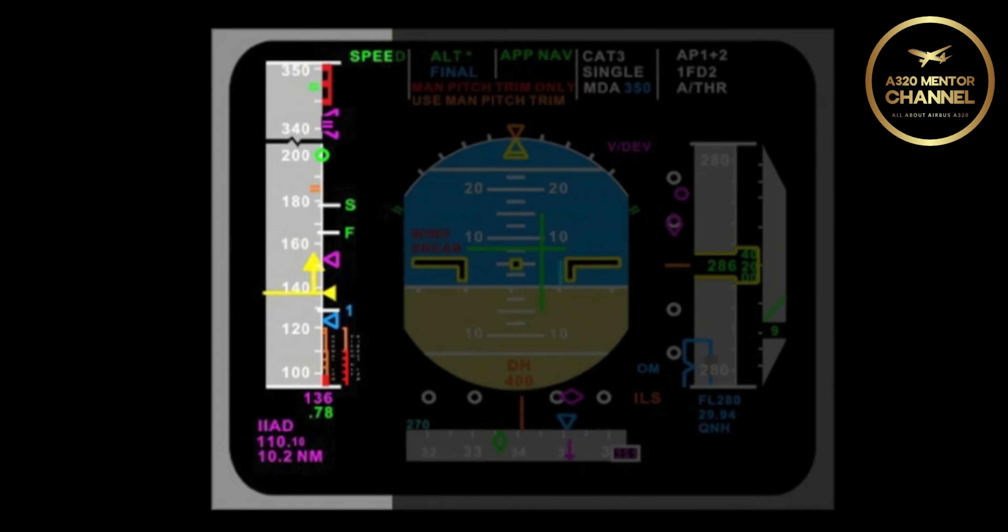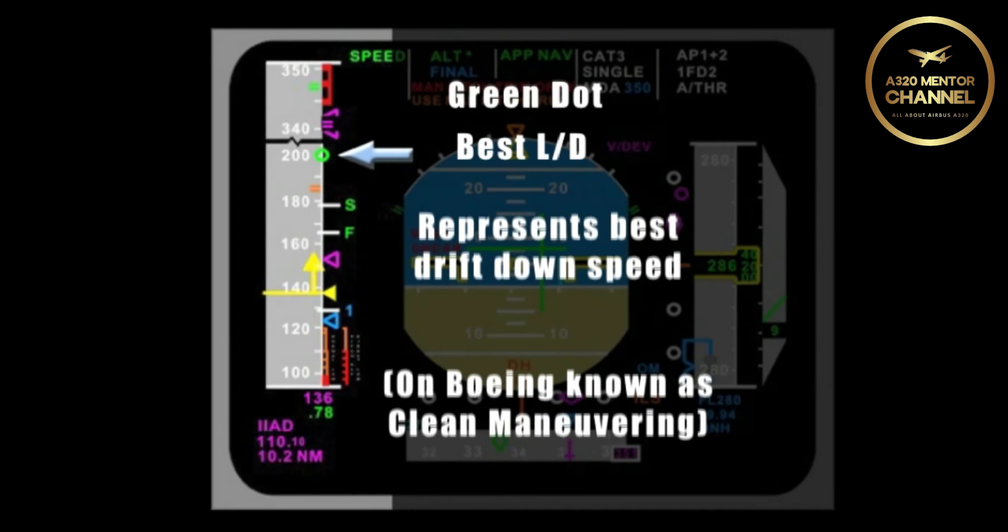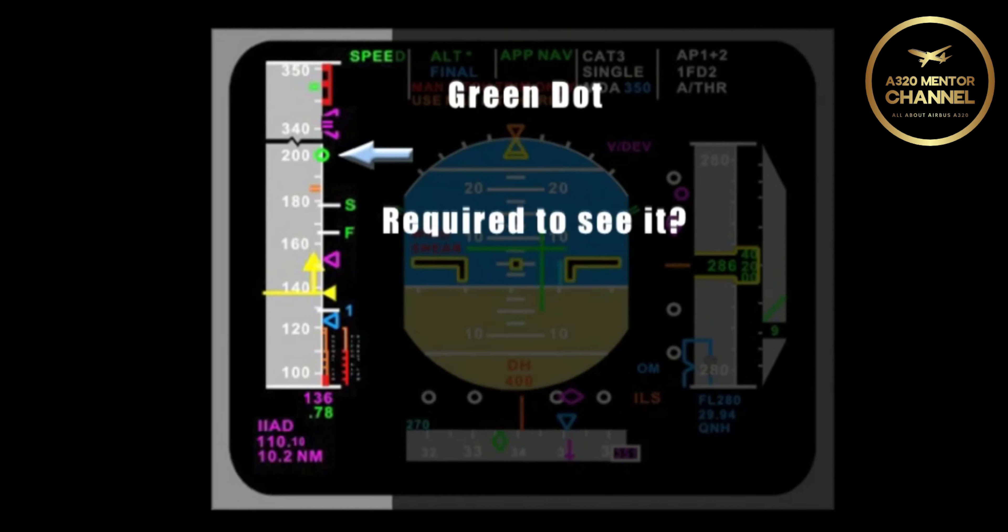On the speed tape, we have a little green circle. What is that? That's called green dot. What does green dot represent? Technically, it is the best lift over drag. It also represents our best drift down speed. On the Boeing, this is known as clean maneuvering speed. What is required for the pilot to actually see the green dot? The aircraft must be in clean configuration.